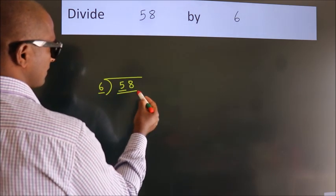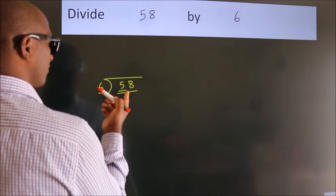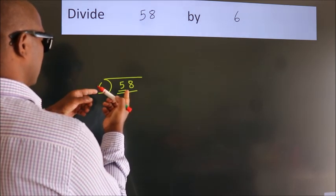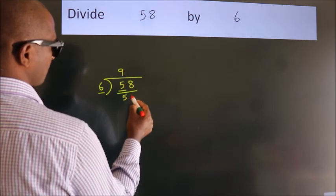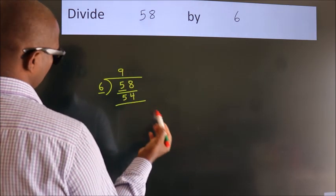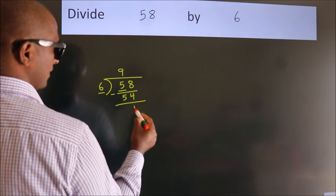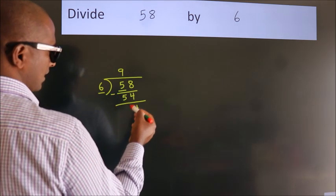should take two numbers: 58. A number close to 58 in the 6 table is 6 nines, 54. Now we should subtract. We get 4. After this,